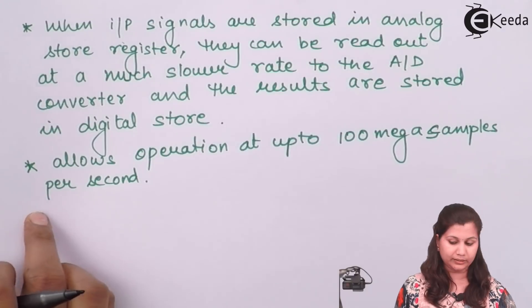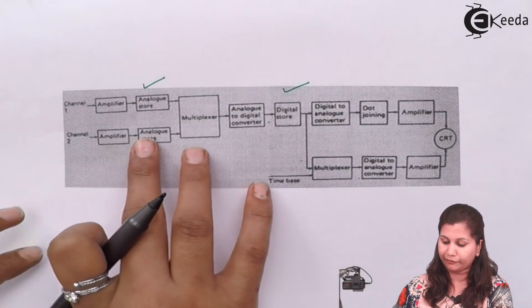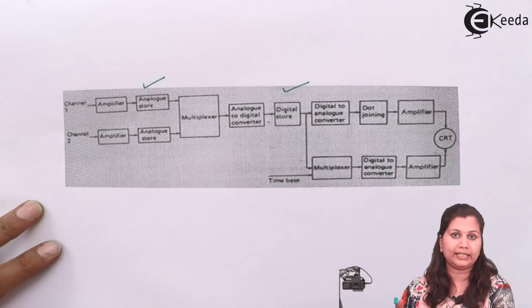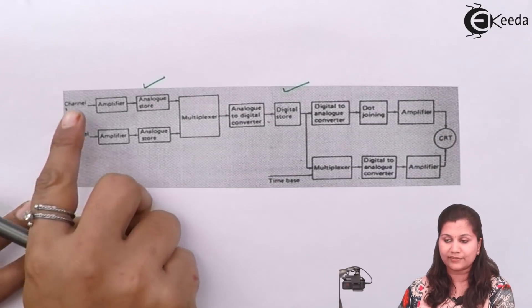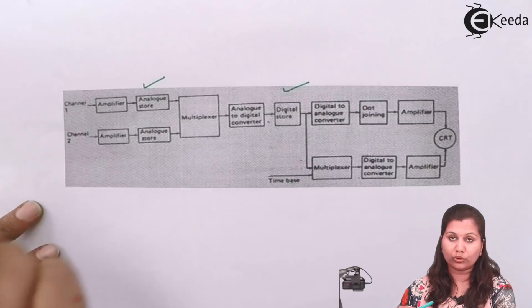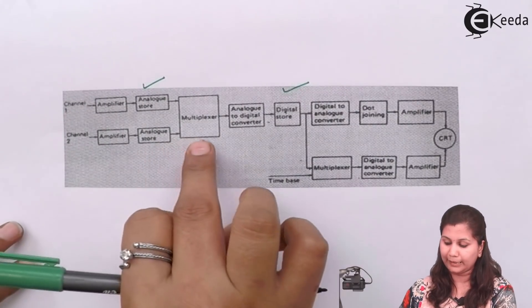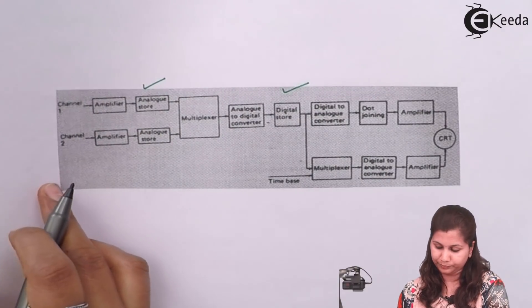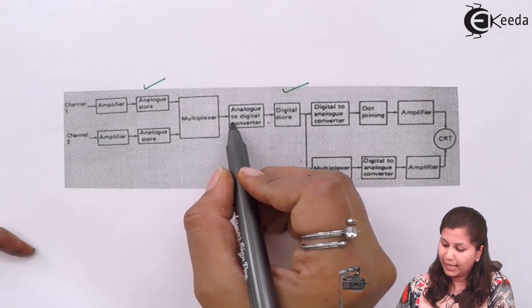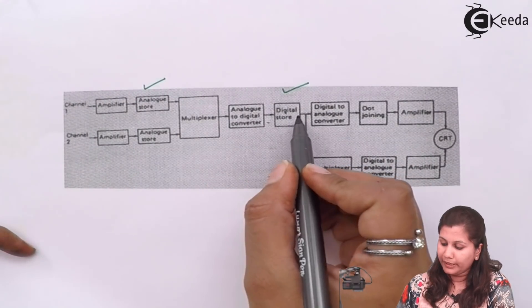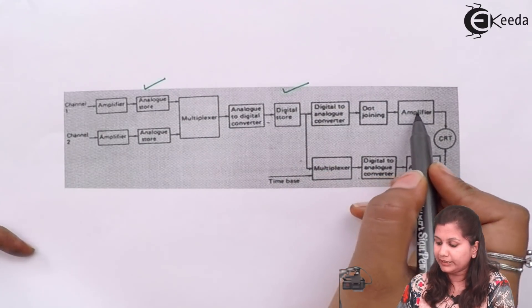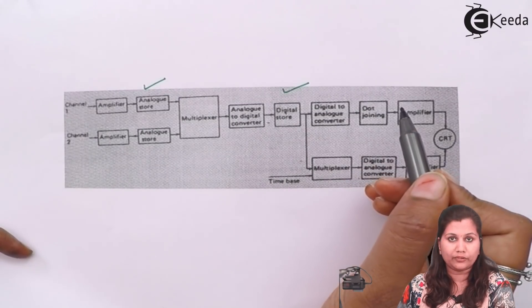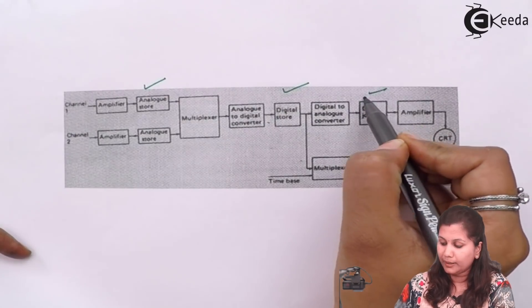A multiplexer is used after the analog store and after the digital store so that different channels connected to the oscilloscope can be selected. Many channels can be used. When the analog signal is converted into digital form and then converted back into analog form for display on the CRT screen, this reconstruction of the waveform is done by the dot-joining process.